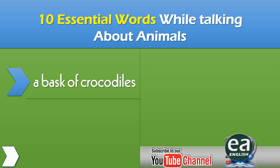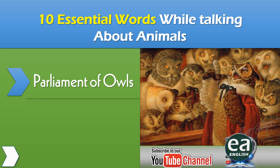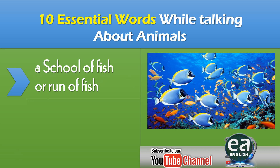A lot of crocodiles at one place is known as a bask of crocodiles. The most important and interesting collective noun — a group of owls is called a parliament of owls. A group of fish is called a school of fish, or you can say a run of fish.